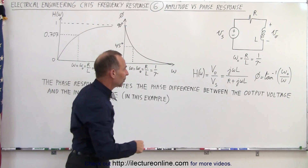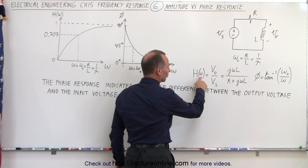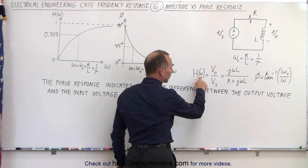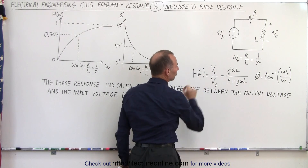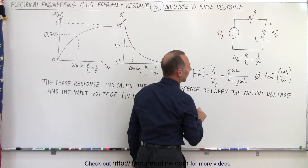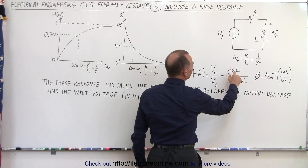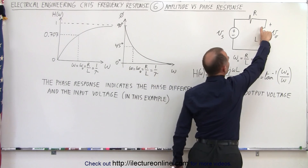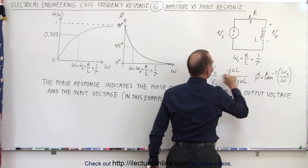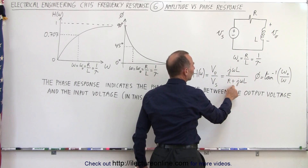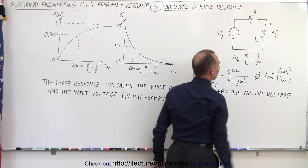Notice that we have the response function as a function of frequency, which is the ratio of the output voltage over the input voltage. This can be written as the impedance across the inductor — j·omega·L — divided by the resistance plus the impedance across the inductor.